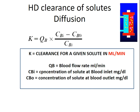Hemodialysis clearance of solutes by diffusion can be calculated by the following formula: K (clearance for a given solute, in mL/min) equals Qb (blood flow rate, mL/min) multiplied by the concentration at the blood inlet minus the concentration at the blood outlet, divided by the concentration at the blood inlet. For example, to measure urea clearance, multiply the blood flow rate by the concentration of urea at blood inlet minus concentration of urea at blood outlet, divided by concentration of urea at the blood inlet.